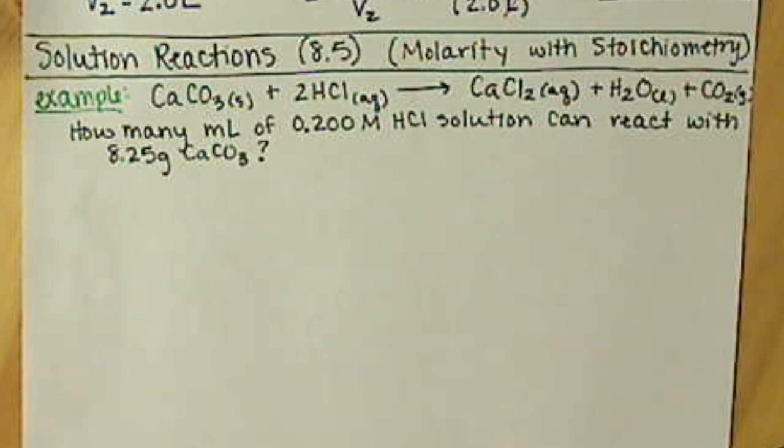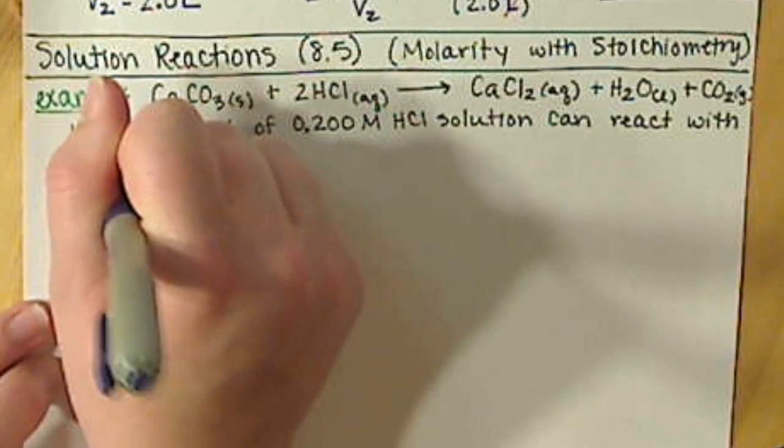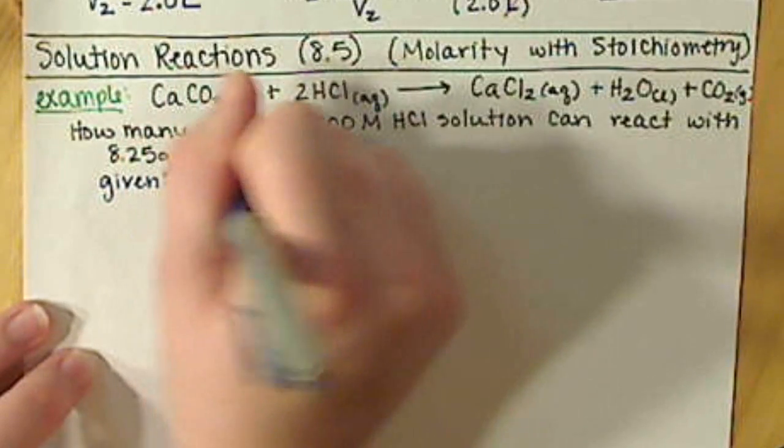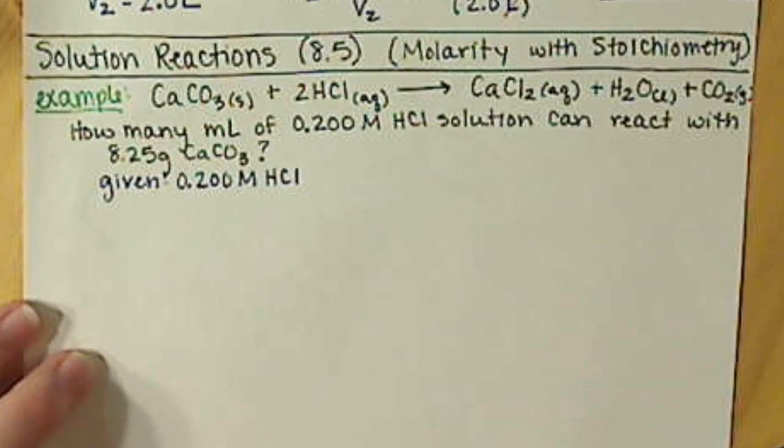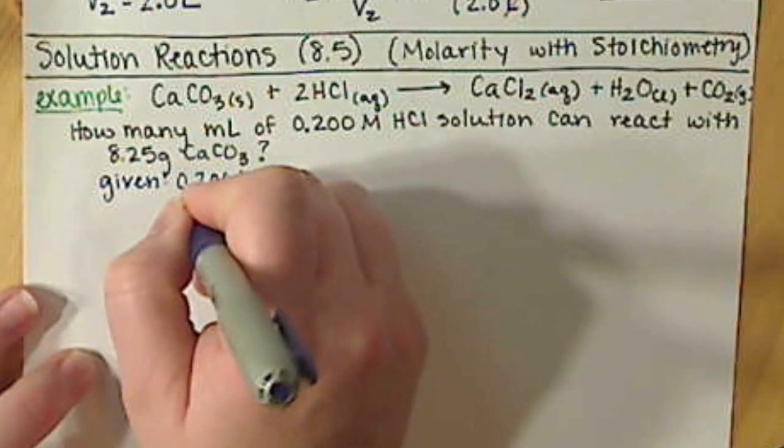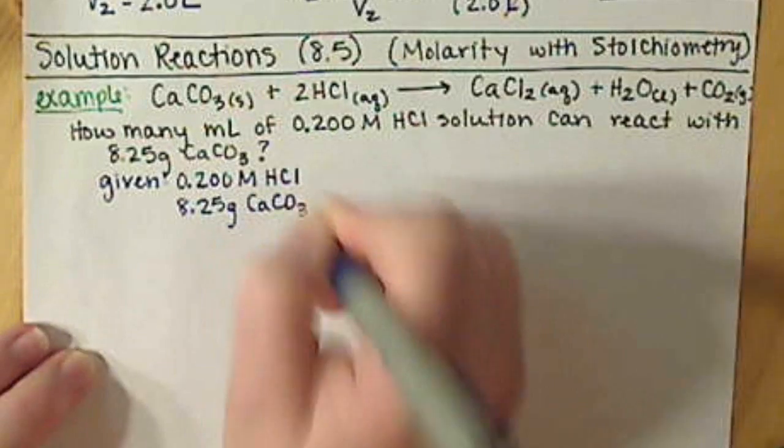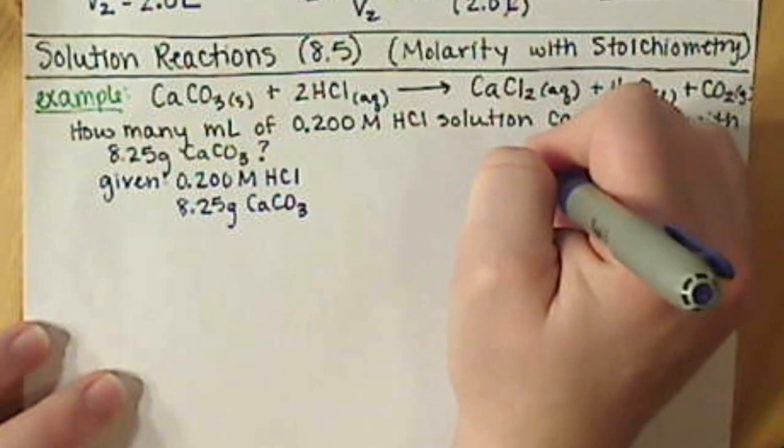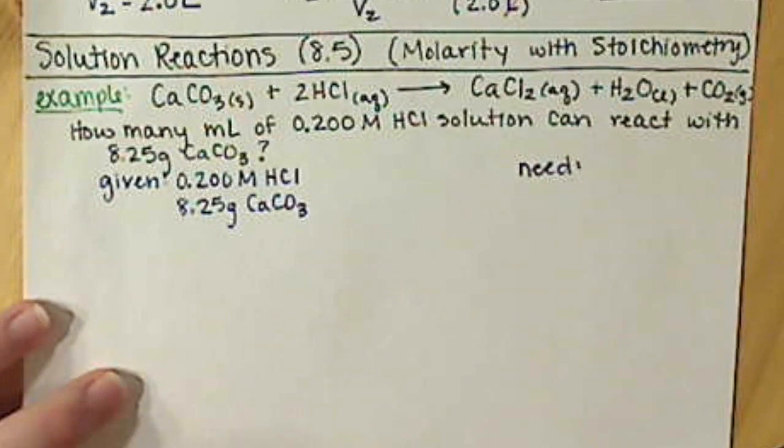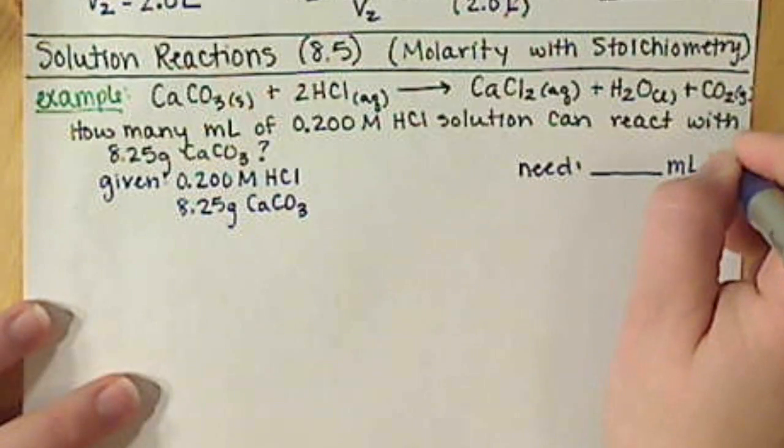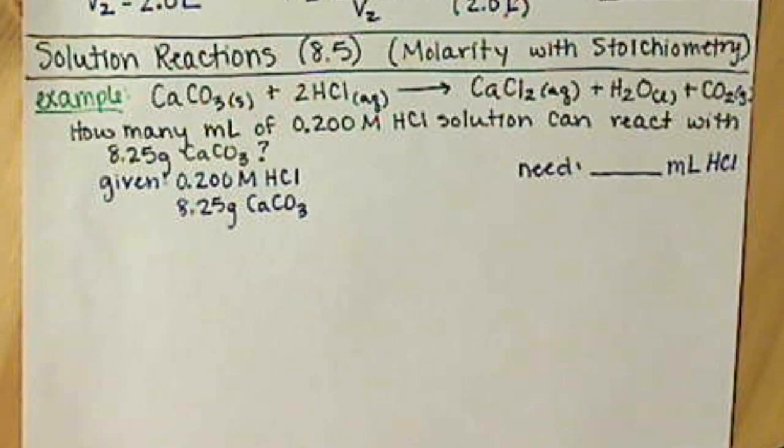How many milliliters of 0.200 molar hydrochloric acid solution can react with 8.25 grams of calcium carbonate? So if we kind of map out what we're doing here, we've been given 0.200 molar HCl, and we have 8.25 grams of calcium carbonate, and we need milliliters of that HCl solution.